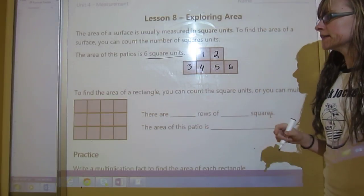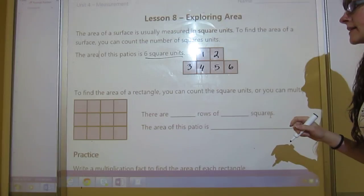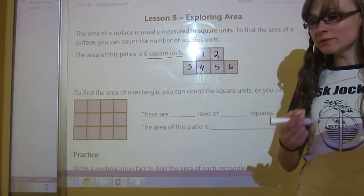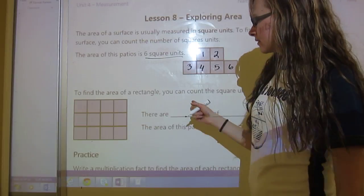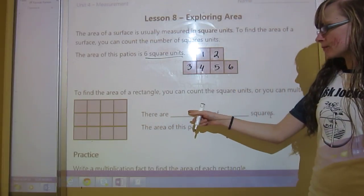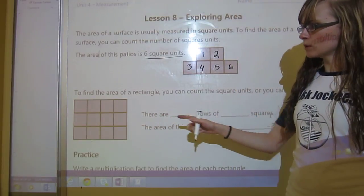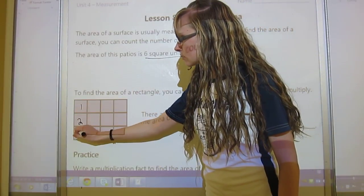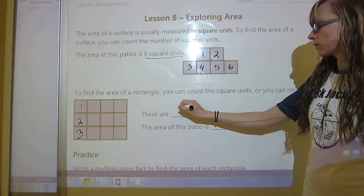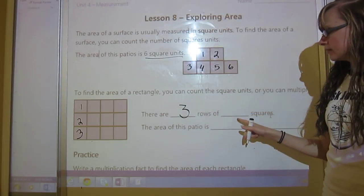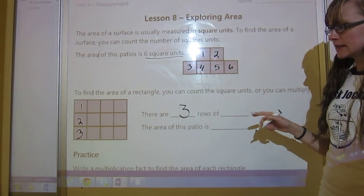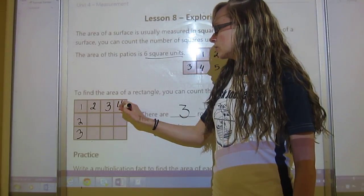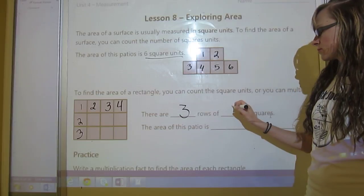Down here it says to find the area of a rectangle, you can count the square units or you could multiply. So let's look at how to multiply. It says there are blank rows. Rows go across, columns go down. So there are one, two, three. There are three rows of, and how many squares are in each row? We've got one, two, three, four squares in each row.